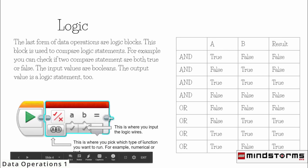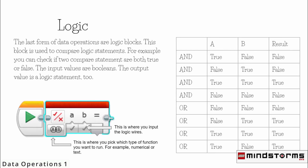The last form of data operations are logic blocks. This block is used to compare logic statements. For example, you can check if two compare statements are both true or false. The input values are booleans and the output value is a logic statement too. To the right are the inputs and results of AND and OR statements — basically the operations that logic statements can take.